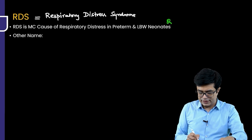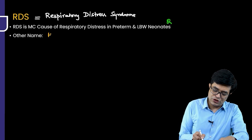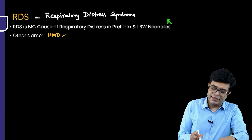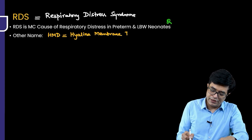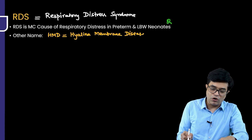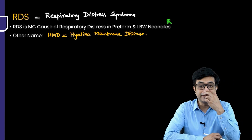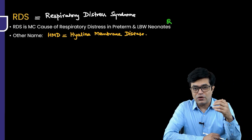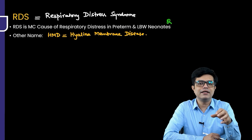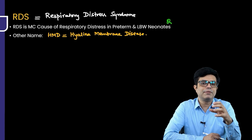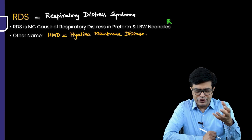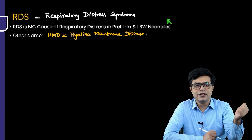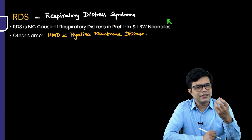Another name for RDS is HMD, which stands for hyaline membrane disease. However, hyaline membrane disease is a less popular name. There is a hyaline membrane which forms in the alveoli, but it appears only in severe long-standing RDS and is not indicative of the pathophysiology. So the term RDS is preferred over HMD, though they are sometimes used synonymously — they are the same condition.